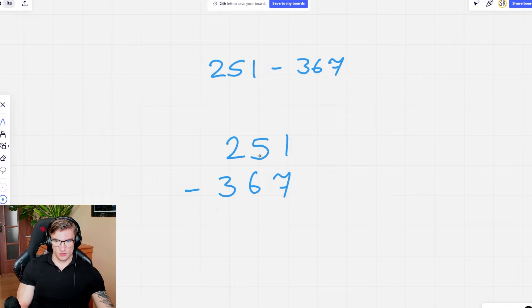So I'm going to do 1 minus 7, which I can't do, so I'm going to borrow one from the 5. The 5 becomes a 4, so I got 11 minus 7 which leaves me with 4. Now 4 minus 6, I can't do. I need to borrow one from the 2. The 2 becomes a 1, so I got